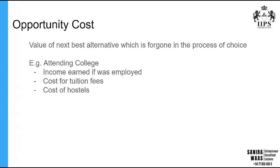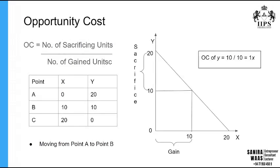Now let's see how we calculate and identify opportunity cost. In opportunity cost, we need to calculate the cost of making a decision. Opportunity cost is identified with this simple equation: number of sacrificing units divided by number of gaining units.